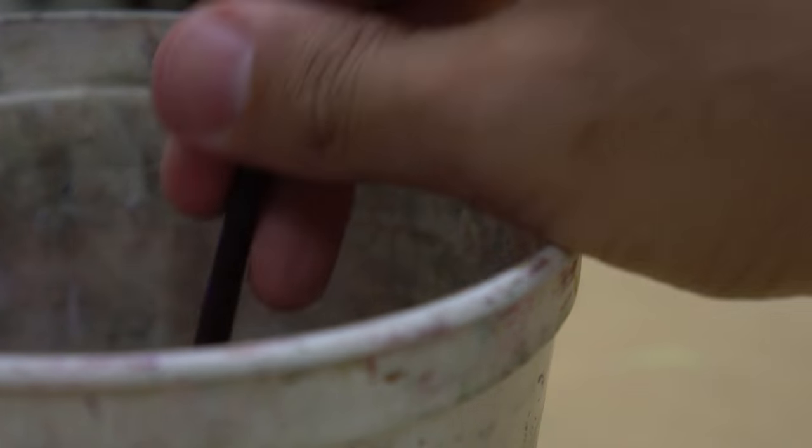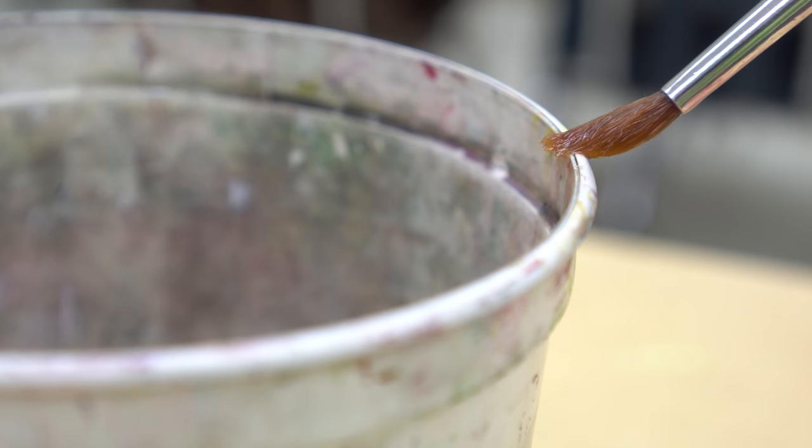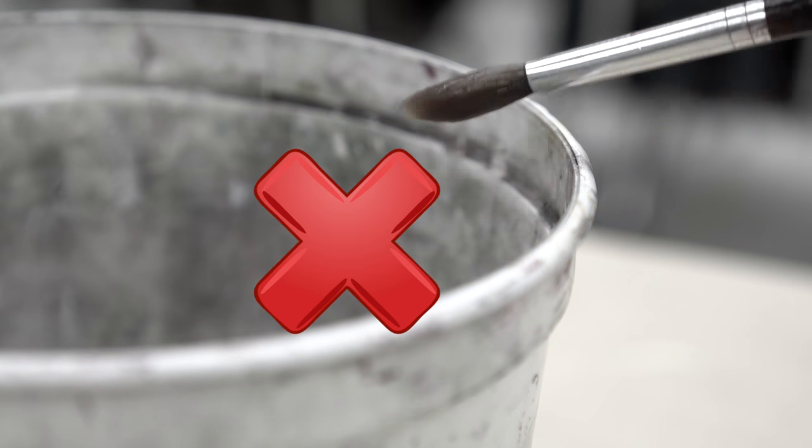All right, let's wash our brush. Dunk it in water and swirl. To dry it, use the rim of the bucket. Never tap. It makes a mess.